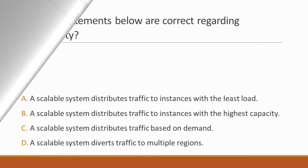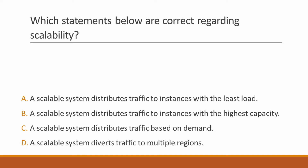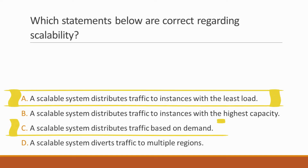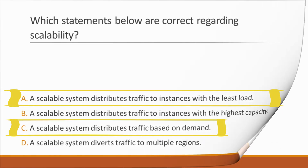Next question: Which statements below are correct regarding scalability? Options: A. A scalable system distributes traffic to instances with the least load, B. Distributes traffic to instances with the highest capacity, C. Distributes traffic based on demand, D. Diverts traffic to multiple regions. Correct answer is option C, because scalability scales up with an increased number of instances and scales down automatically based on demand, and diverts traffic to instances with the least load.